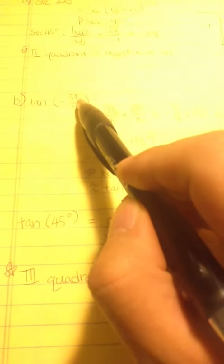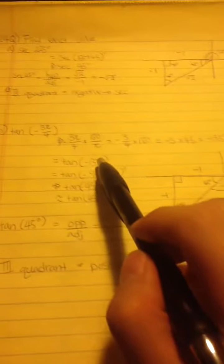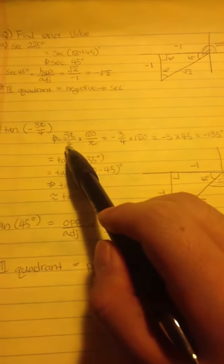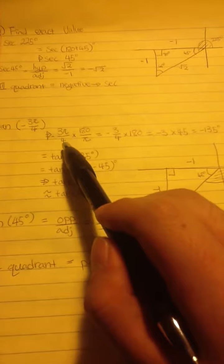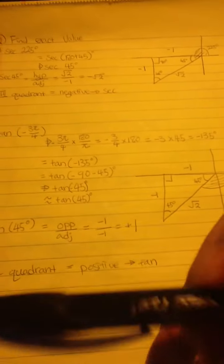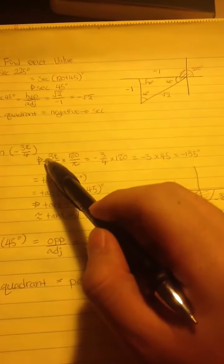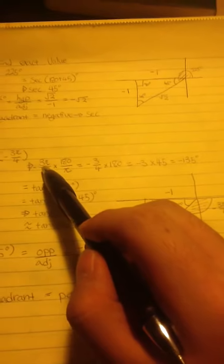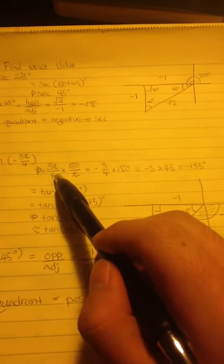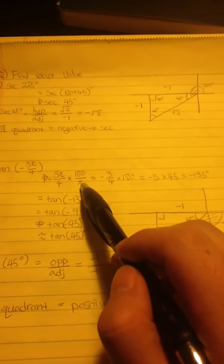And question B: tangent negative 3π over 4. In here, I actually changed the radian to degree, but actually you guys don't even have to do it. But I used this so I can get the degree and explain better. So I changed the radian to degree first: negative 3π over 4 multiplied by 180 over π.